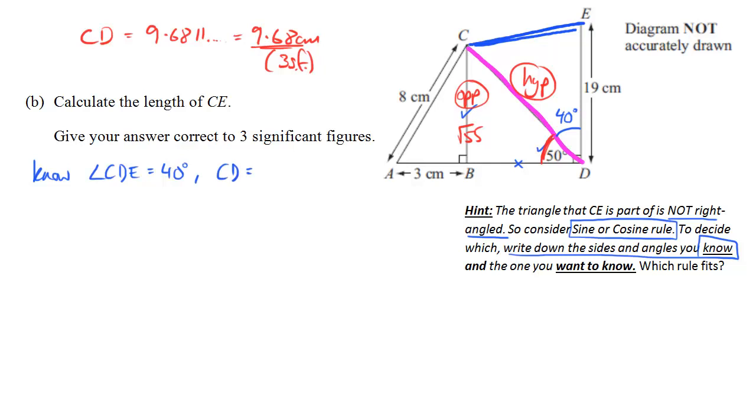Well, yes, we know that CD is what we just worked out. That's 9.68 centimetres. We know DE. That's labelled nicely on the diagram. So DE is 19 centimetres. Do we know any more sides? Well, there's only one more side and that's the one that we want. So now we write down the things that we want to know. We want CE.